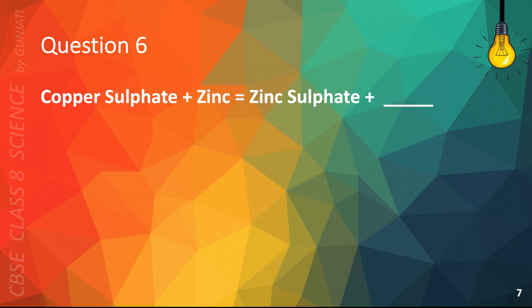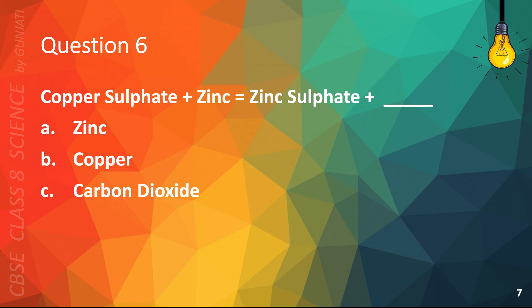Question 6: Copper sulfate plus zinc equals zinc sulfate plus blank — A. Zinc, B. Copper, C. Carbon dioxide, or D. Water. The correct answer is B. Copper.